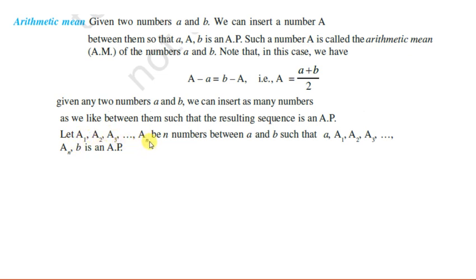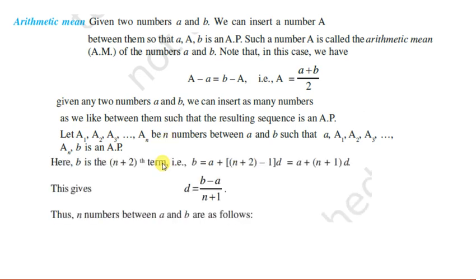Suppose A1, A2, up to An are the n numbers inserted between a and b such that a, A1, A2, up to An, and b form an AP. Since n numbers are inserted and a is one element before them, b will be at the n plus 2th position. So b equals a plus (n plus 2 minus 1) times d, giving us d equals b minus a upon n plus 1.